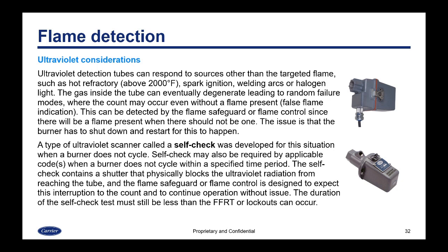Ultraviolet detection tubes can respond to sources other than the targeted flame, such as hot refractory — but unlike infrared where this occurs at around 1,000 degrees Fahrenheit, with ultraviolet it has to be much hotter, around 2,000 degrees Fahrenheit. It can also respond to spark ignition, welding arcs, or halogen lights. The gas inside the tube can eventually degrade, leading to random failure modes where the count may occur even without a flame present — a false flame indication. This can be detected by the flame safeguard since there will be a flame present when there should not be one, but the burner has to shut down and restart for the flame safeguard to notice this.